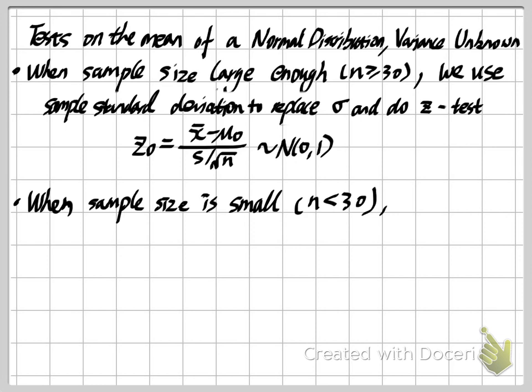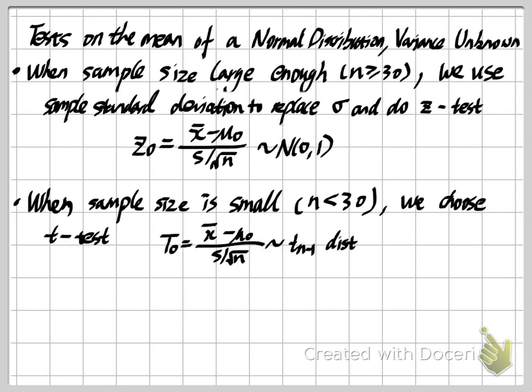The second case is if our sample size is not large enough — here that means n is smaller than 30. In this case, we still have the same equation: (x̄ − μ₀) / (s / √n). But the problem is this is not a normal distribution; instead, it is a t-distribution. So in this case we call this a t-test, and we will use the t-distribution table to help us give a conclusion.